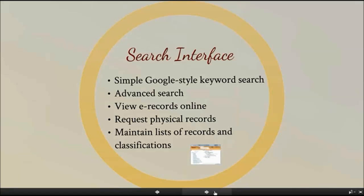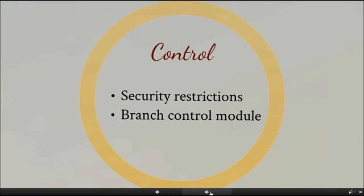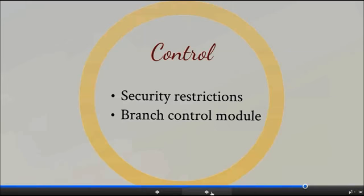The search interface features a simple Google-style keyword search, but there's always a more advanced option that will allow you to build a very precise query. You can view electronic records immediately online, or if you're looking at physical records, there's an easy way to request those via email, and you can see all of the descriptive metadata on the detailed display. You can also select records and classifications and maintain lists, which you can view, make reports out of, or send in a mass email to the records manager as a request. We have security restrictions, so if certain records are private, we can make sure people only see what they're allowed to.